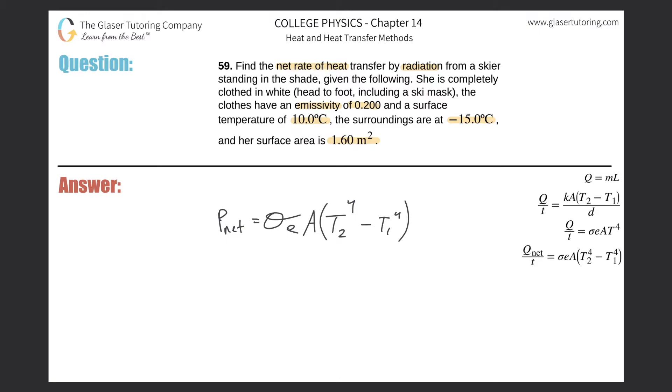The net power - this is actually very nice because it's literally just a plug-in problem. The Stefan-Boltzmann constant is 5.67 times 10 to the negative 8. The emissivity they told us it's white clothing, so the emissivity is low. Remember, black body radiation would be if you wear black clothing - it'd be closer to one. The whiter it becomes, the more reflective it becomes, and therefore perfect reflection would actually be zero. The area is going to be 1.60.